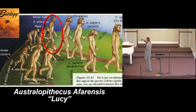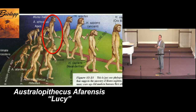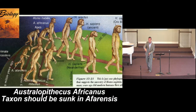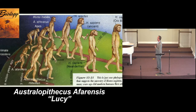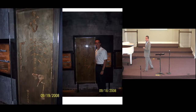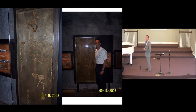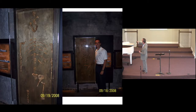Next on the list: Australopithecus afarensis — that's Lucy. Many scholars now believe Australopithecus afarensis should be sunk into the same taxon as Lucy. The most famous by far is Lucy, so let's talk about her. These are the bones of the original Australopithecus afarensis found in 1974 by Richard Leakey. They claim it's 40% of the original skeleton — I would say about 20%. There are no hands, no feet, only one piece of a leg, maybe half of the pelvis.